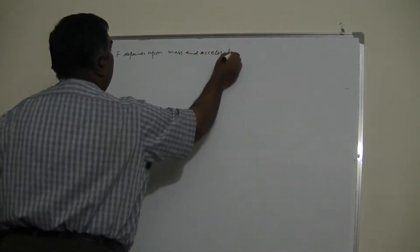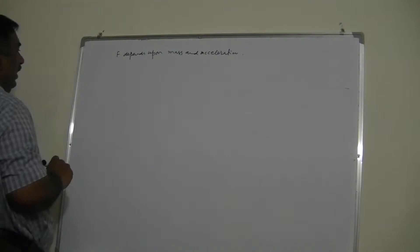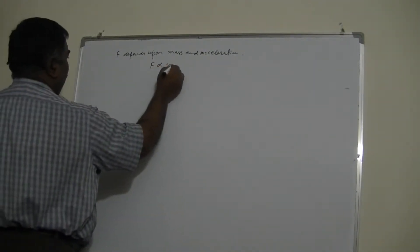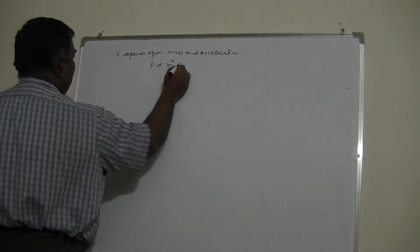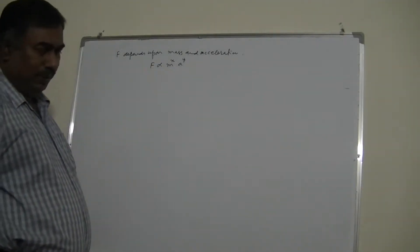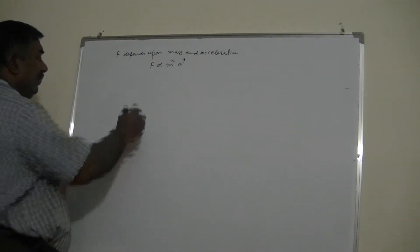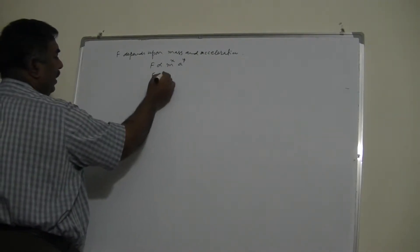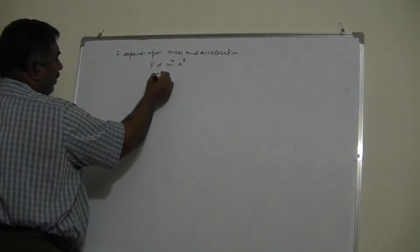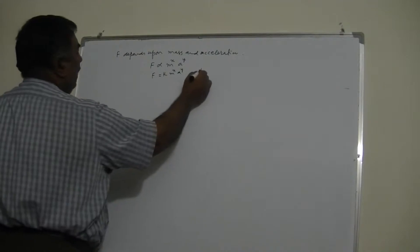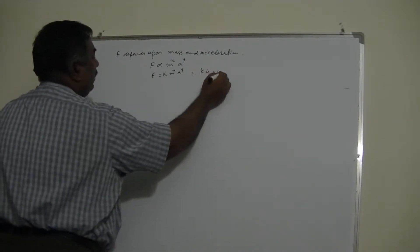What will be its formula? Let us see — if force depends on mass and acceleration, what should be its formula? I will say F varies as m to the power x and a to the power y. I can eliminate the variation symbol by a constant k: F = k · m^x · a^y, where k is a unitless constant.